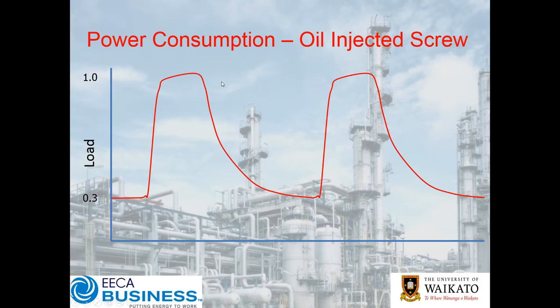When you go to an oil-injected screw compressor, we've no longer got a nice square curve — we've got quite a decay. The reason for that is with your oil-injected screw compressor, you've got oil and air in a separator vessel. As you turn the compressor off-load, the compressor is still pumping against the back pressure in that vessel and that vessel has to slowly discharge its pressure. The unloaded power is actually a little higher at about 30%, because the compressor is still pumping oil in the unloaded state.